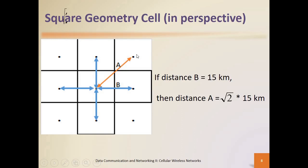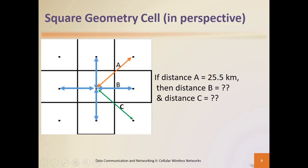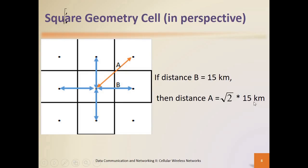So in this case it would be square root of two times 15, which gives you the distance value for placing your base station for the adjacent cell. A equals square root of two times B. If B is your reference point, you divide both sides by square root of two, so B equals A divided by square root of two.